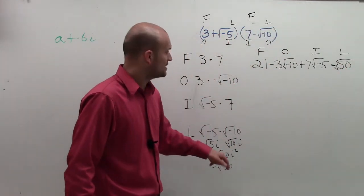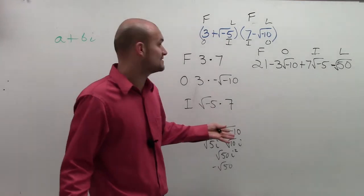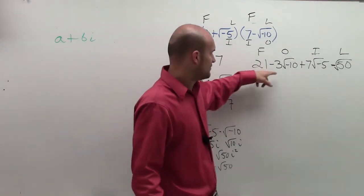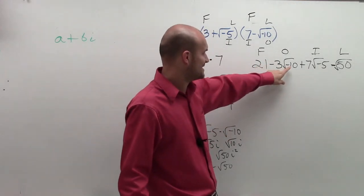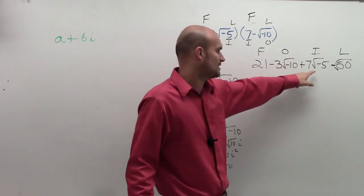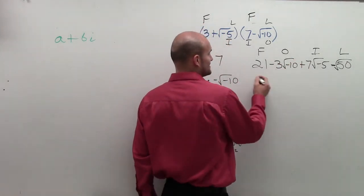Because i squared, remember, is negative 1, so we get the negative. So now, let's see if we can simplify this. Well, 21, can't simplify that. I can simplify the square root of negative 10.